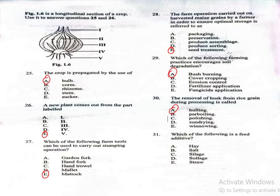Question 31: Which of the following is a feed additive? A, hay. B, salt. C, silage. D, silage. E, straw. The correct answer is B, which is salt. Salt is commonly added to animal feed to improve taste and provide essential minerals, so it is a feed additive.